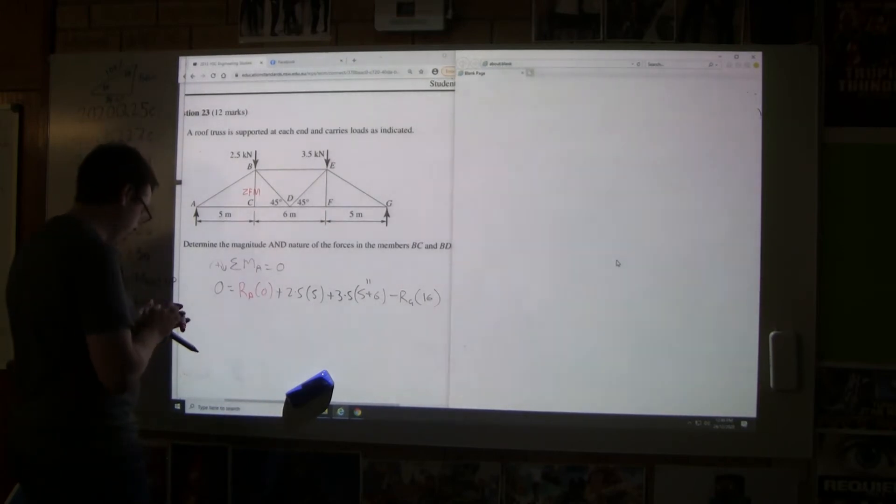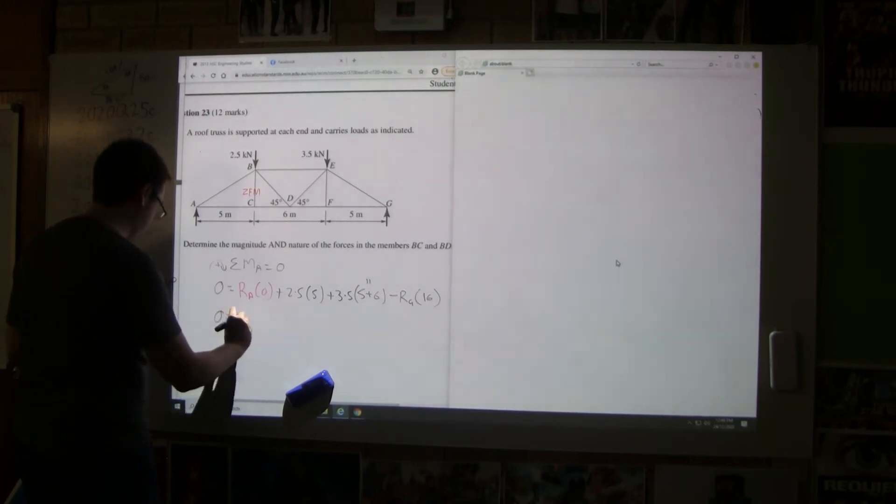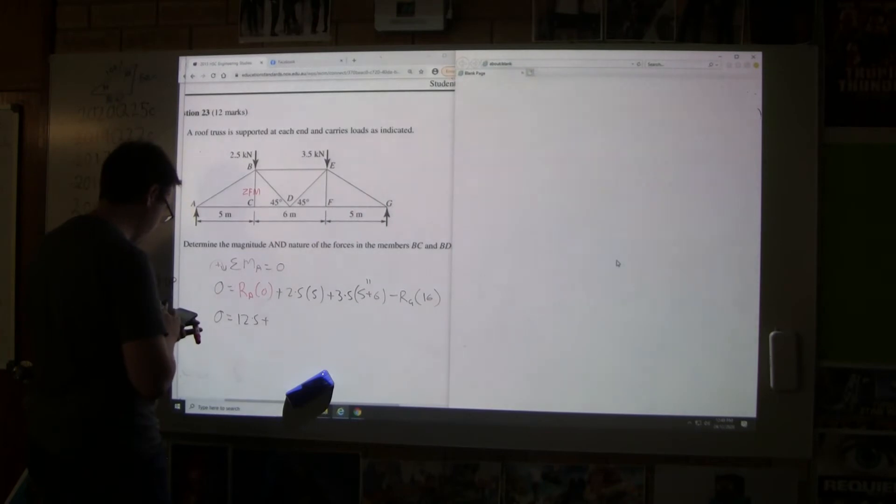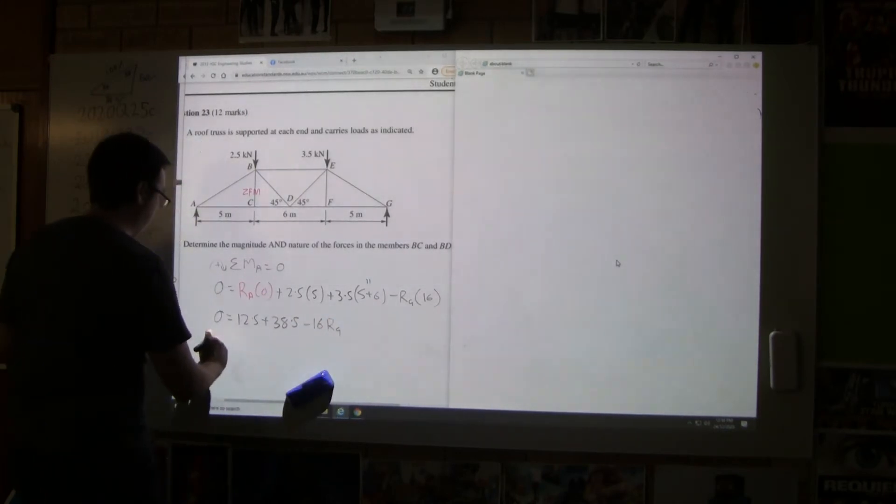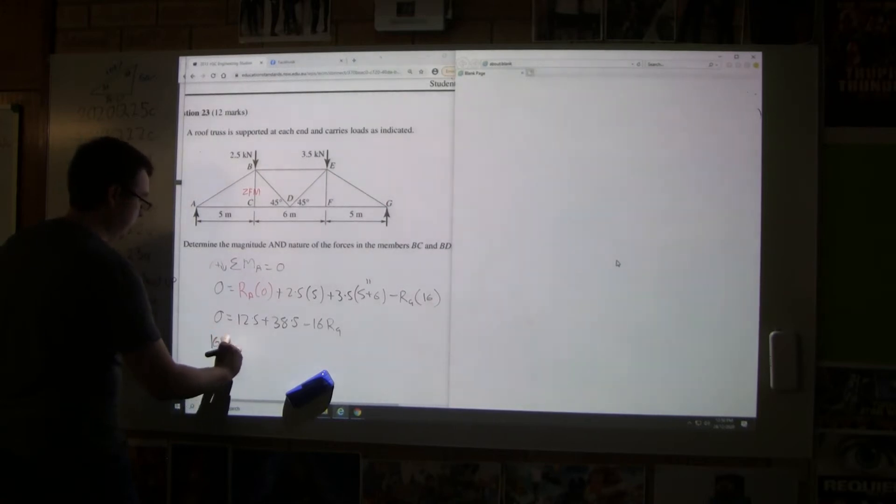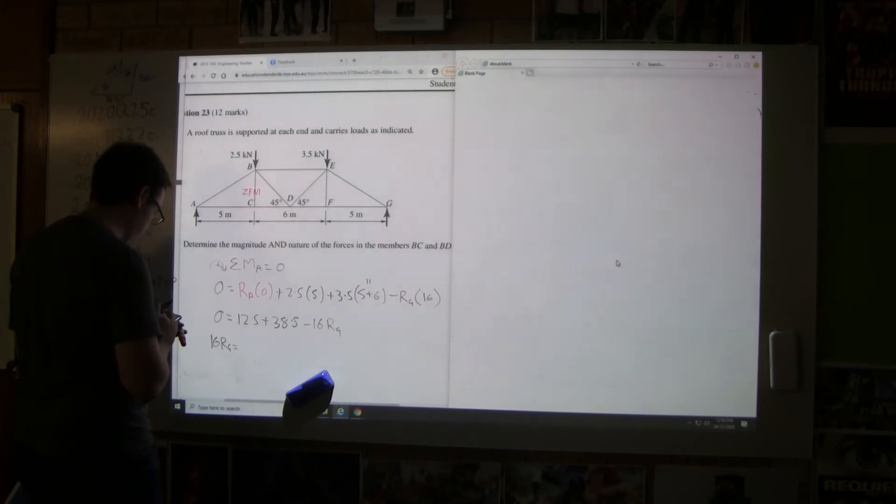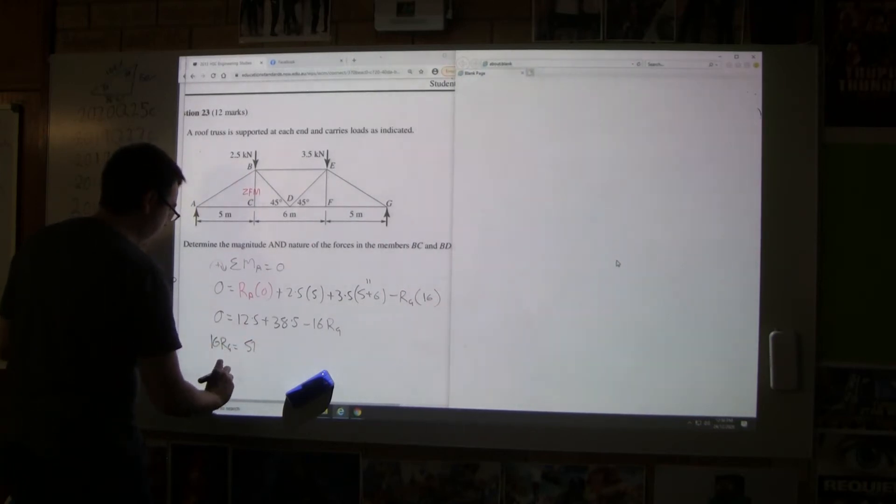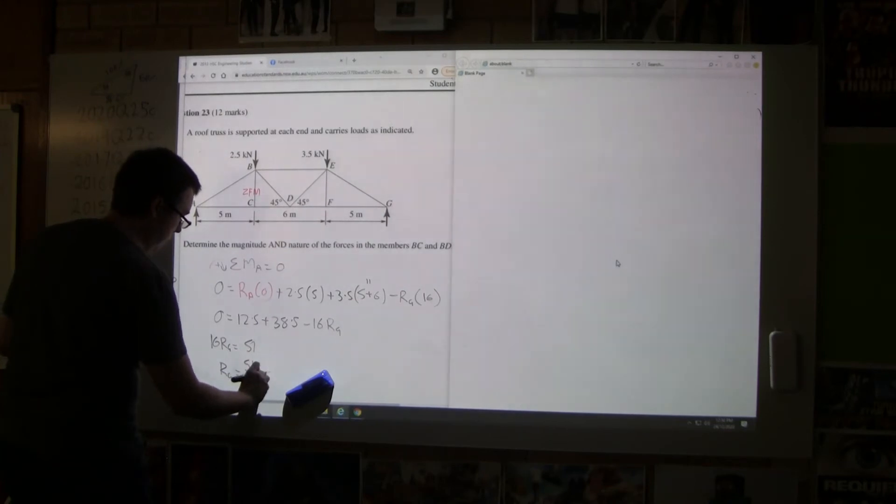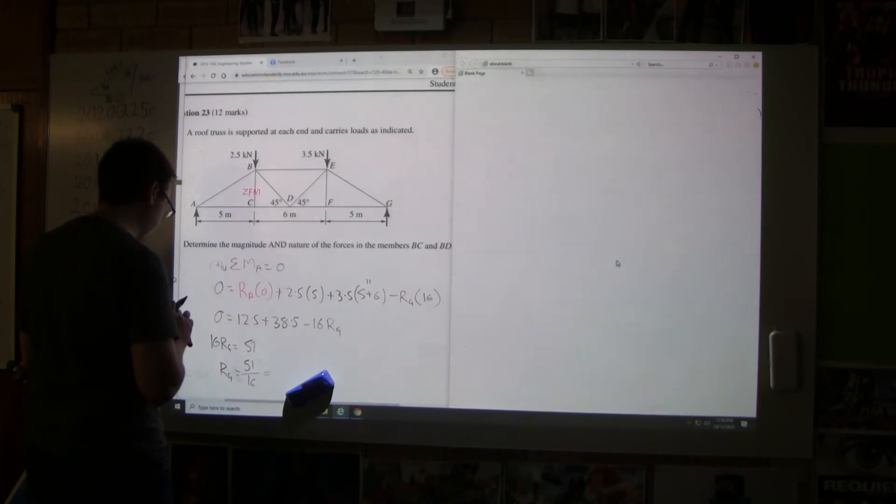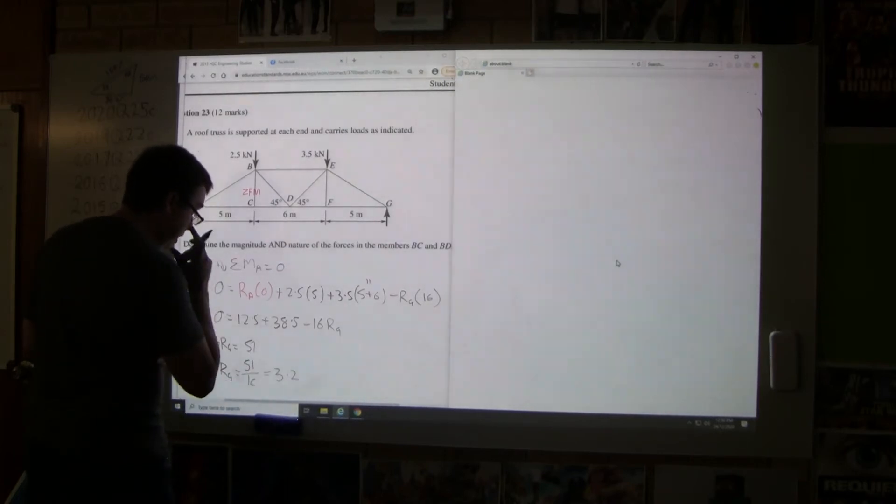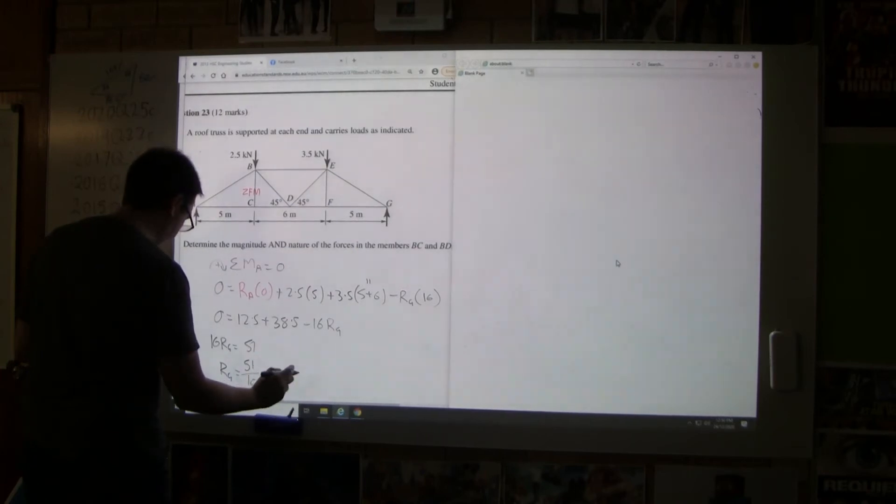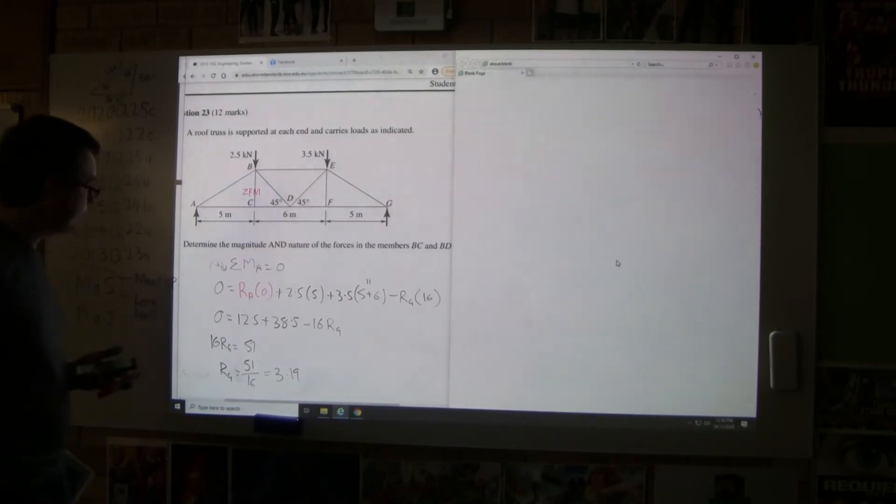This is times by zero, so we've got 2.5 times 5 equals 12.5 plus 1 times 3.5, 3.8.5 minus 16 RG. If I bring that over here, it's going to be 16 RG equals 51. If I could buy 16 RG for 50 bucks, equals 3. I should have done a better estimate, but that seems right. 3.19 kilonewtons up.